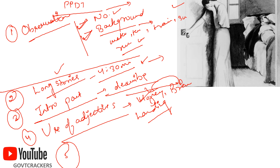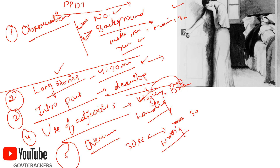The most common mistake is getting nervous. You get nervous when you have 30 seconds to observe the picture, and that time is totally wasted. Some people, because of fear or nervousness, go blank and don't know what to do. They waste those 30 seconds. There is also a dilemma during writing time — they start thinking about what actually needs to be written. These are the basics that need to be covered.